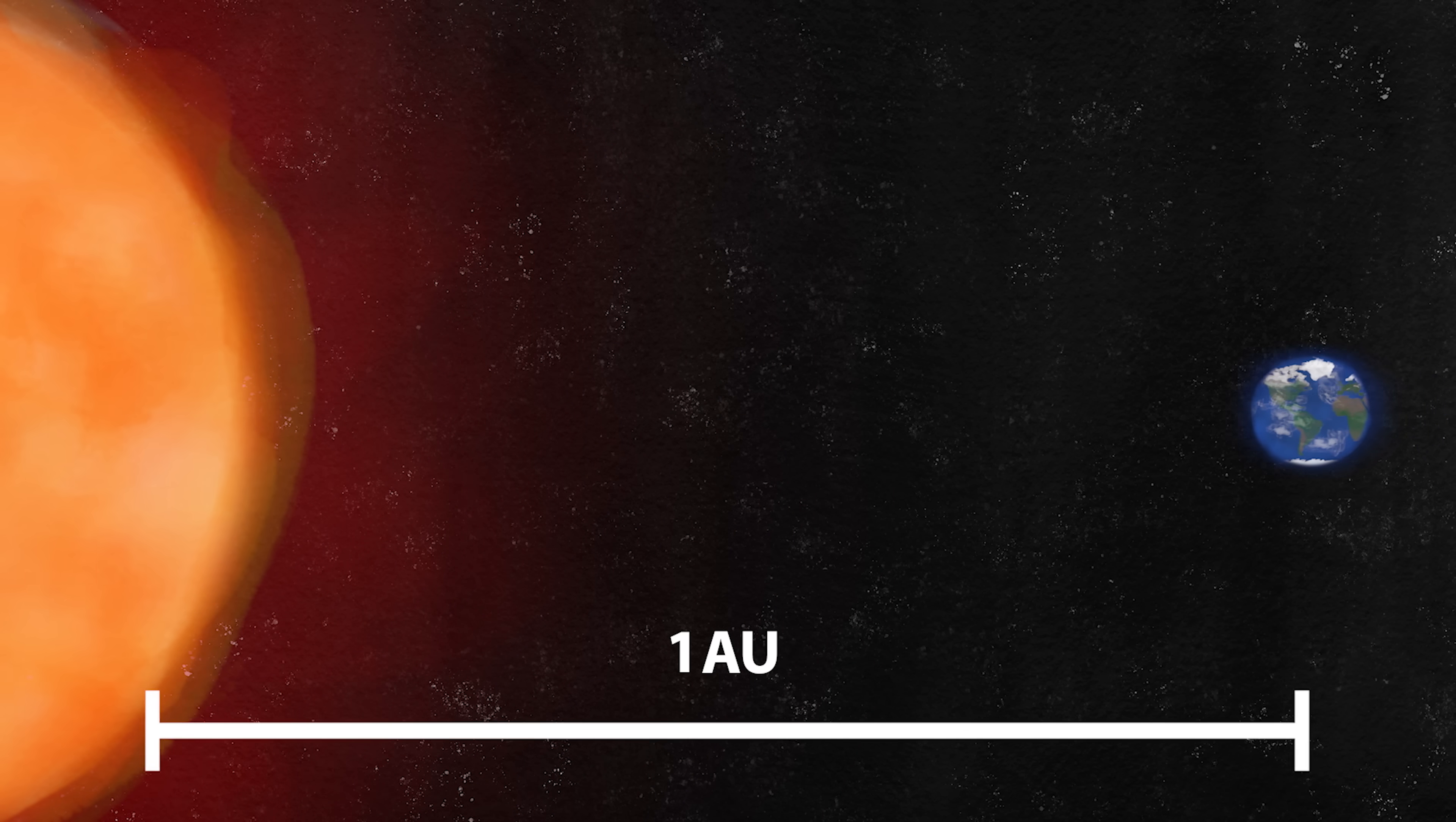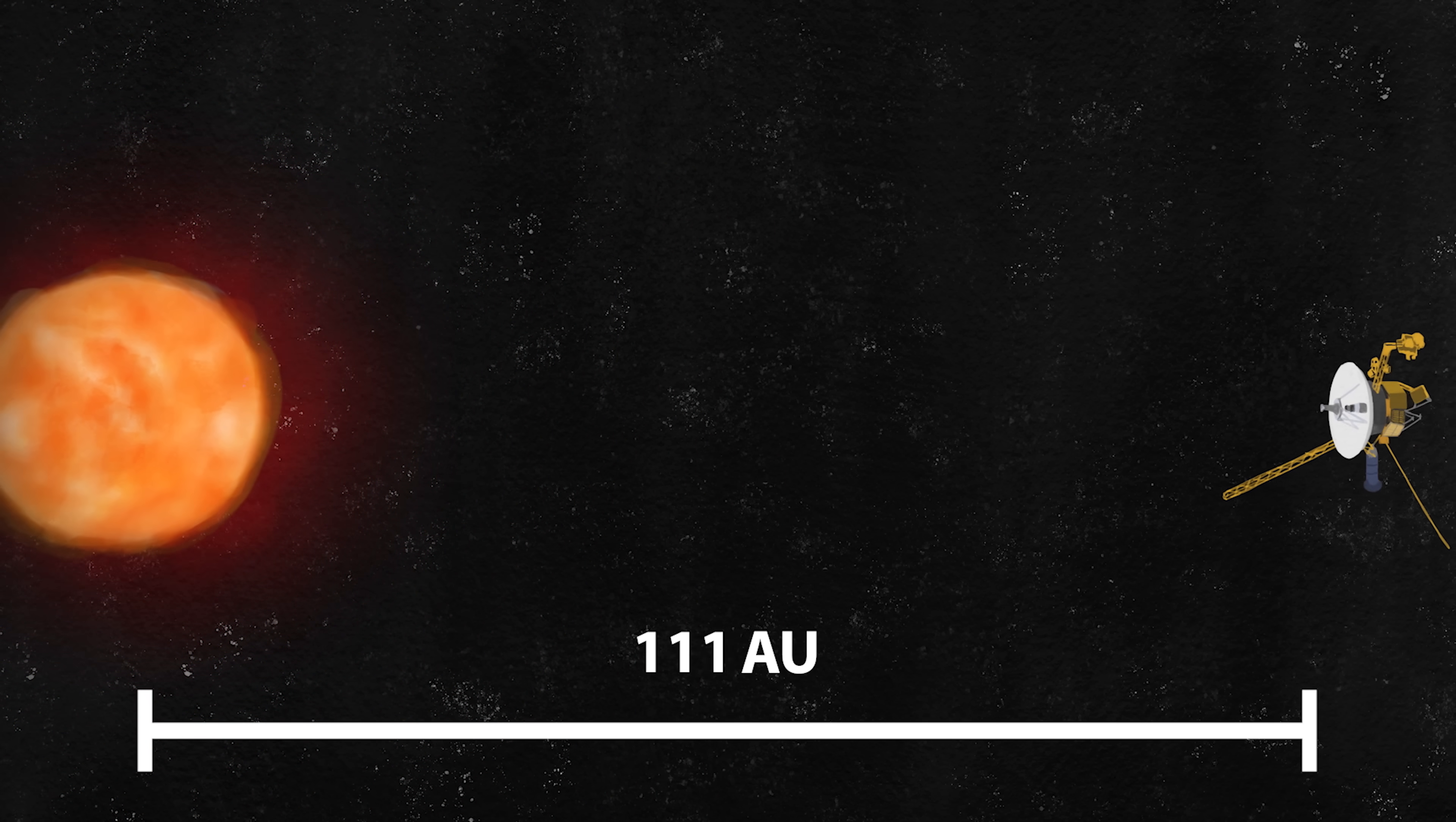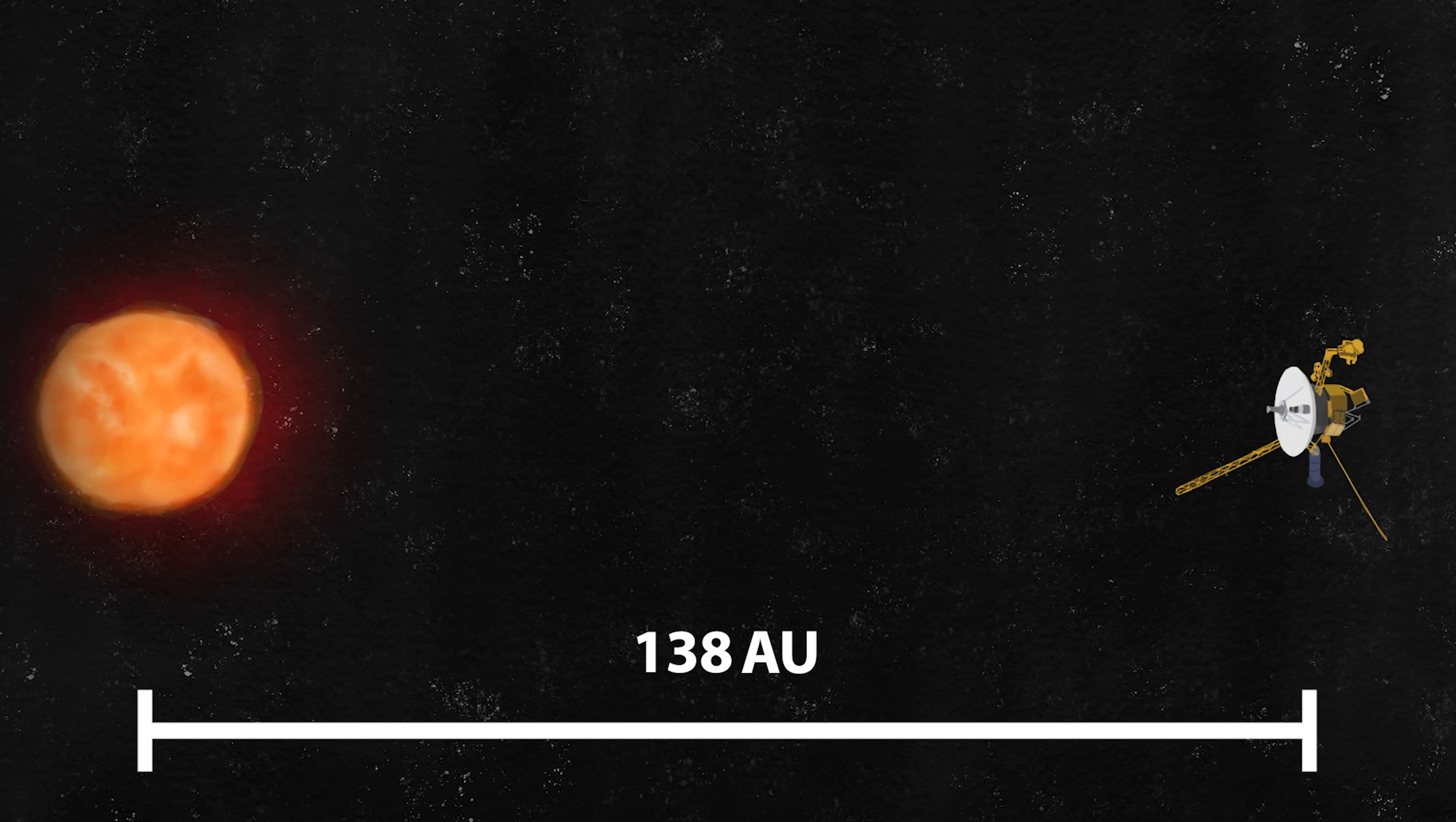But how far away are these distances really? An astronomical unit, or AU, is the distance from the earth to the sun. At its greatest distance from the sun, Pluto is almost 50 AU away. Voyager 1 is currently traveling through interstellar space at 138 AU away from the sun, farther than any spacecraft has traveled.